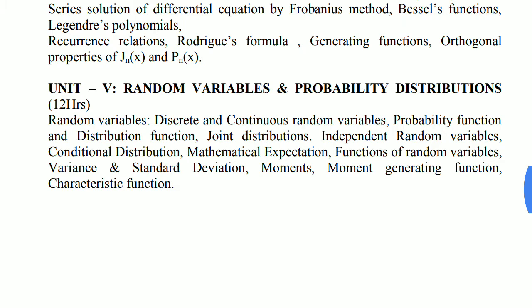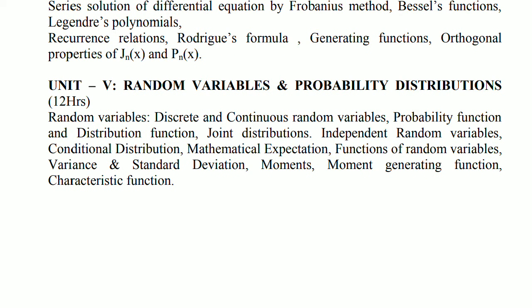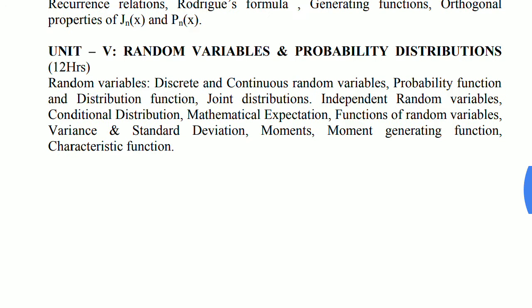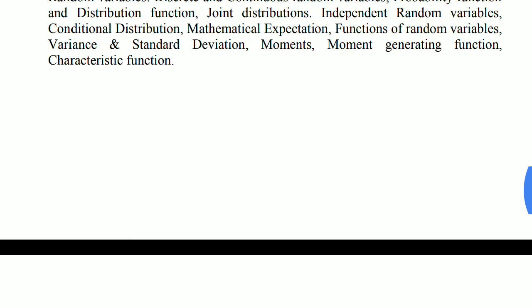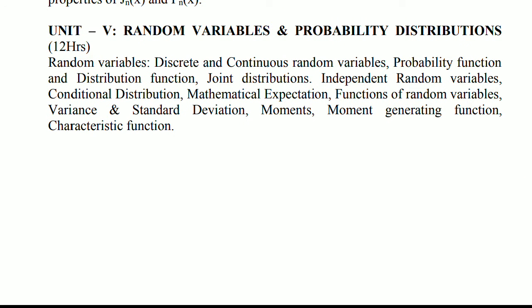Unit number 5, Random Variables and Probability Distributions. In this case, you just do how to find mean, variance, standard deviation, moment generating function, and characteristic function. All are formula-based only and easy to understand and solve. If you do these topics, there is a definite chance that you will get a question of 7 marks or maybe 14 marks.